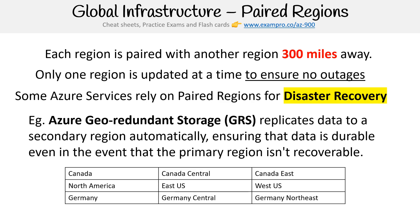Let's say we're talking about Canada. You'd have Canada Central, and its paired region is Canada East. For North America — really talking about the United States — it's the East US region paired with the West US region. And then for Germany, you have Germany Central and Germany Northeast. So it gives you an idea of how far away they are — 300 miles, that's quite a distance.